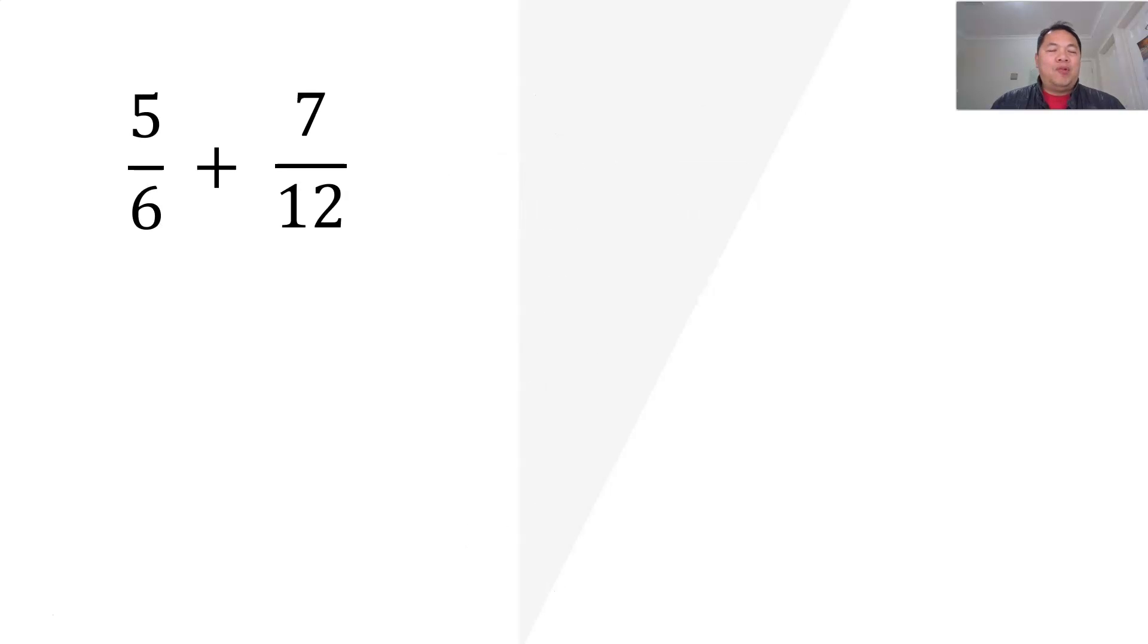So one more. One more example here. What about 5/6 plus 7/12? So we know that 12 is a multiple of 6. So we need to times 2 to the denominator. Likewise, you've got to do the same to the numerator. That's how I get 10/12 plus 7/12. I get 17/12.